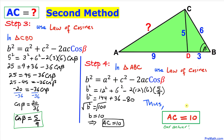So we have found side length AC to be 10 using two different methods. Thanks for watching, and please don't forget to subscribe to my channel for more exciting videos.